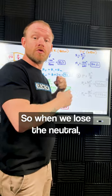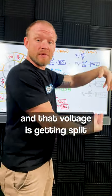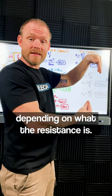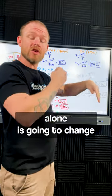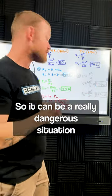So when we lose the neutral, now we have a 240 volt circuit and that voltage is getting split across each one of the loads depending on what the resistance is. The resistance alone is going to change how much voltage is applied to each one of those loads, which can be a really dangerous situation.